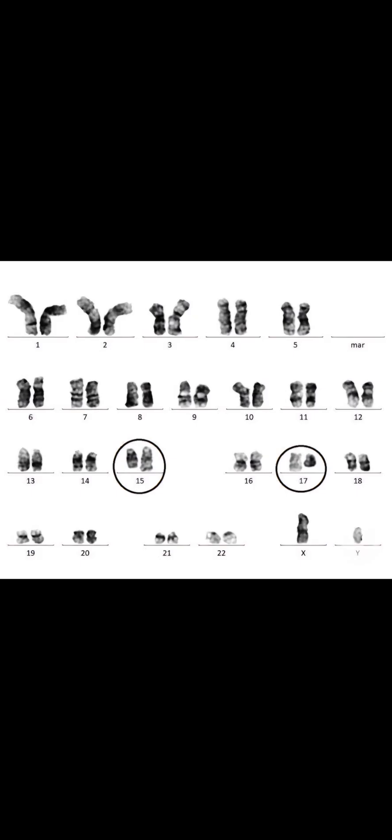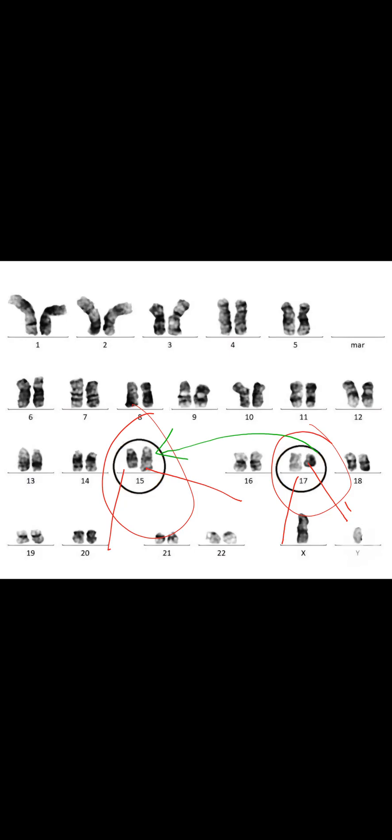Another important translocation involves chromosomes 17 and 15. Chromosome 17 has one normal and one shorter chromosome — it has lost some genetic material. Chromosome 15 has one chromosome with extra genetic material, because part of chromosome 17 has been translocated to chromosome 15. This translocation from chromosome 17 to chromosome 15 involves the RAR gene, which translocates toward the PML gene on chromosome 15. This is seen in APL — acute promyelocytic leukemia.